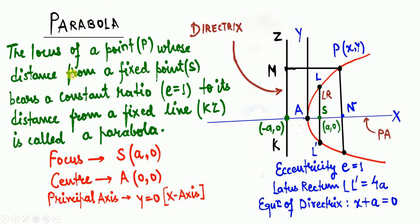I will first define what a parabola means and then explain each term. The locus of a point P whose distance from a fixed point S bears a constant ratio equal to 1 to its distance from a fixed line KZ is called a parabola. Looking at the diagram, the red color curve is the parabola.